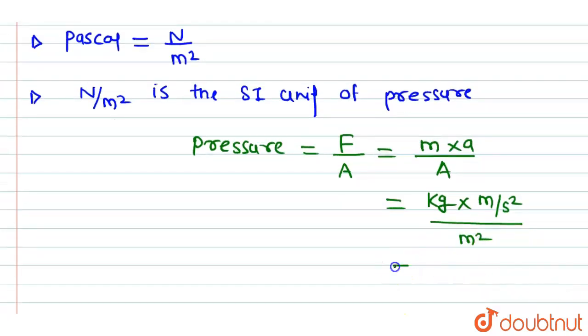On solving this, we get kg into meter divided by second square into meter square.